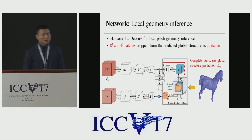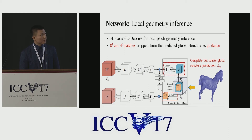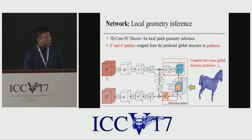Our global network consists of 3D convolutional layers, fully connected layers, and 3D convolutional layers. We use two cropped patches with resolution 8-cube and 4-cube from the predicted global structure as global guidance for the local network. Specifically, the 8-cube is fed into the fully connected layer, and the 4-cube is concatenated with the output of the FC layer.